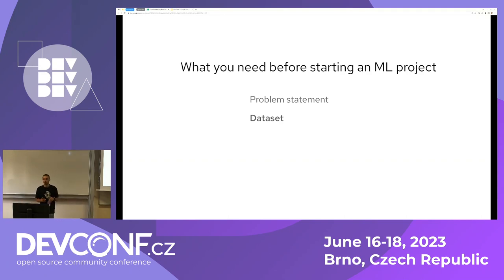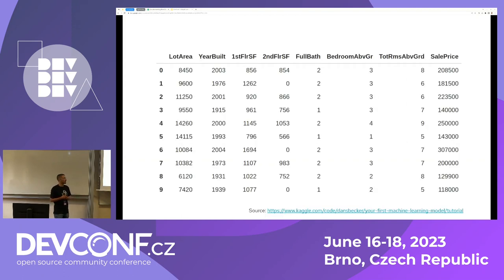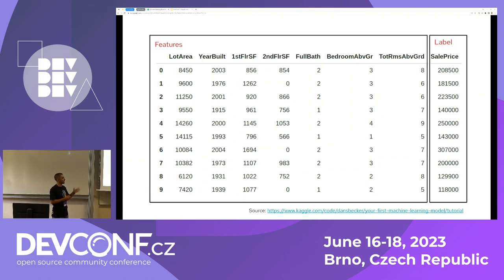Now that we understand the problem, every machine learning project depends on the dataset you have. The typical dataset for a machine learning project has features and labels. An example is predicting the sale price of a house based on size and number of bedrooms — if you've tried Kaggle you've probably seen this problem. In our case we have a bunch of errors and issues and we want to predict whether these will make the cluster fail or not.